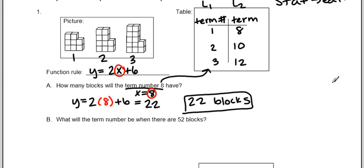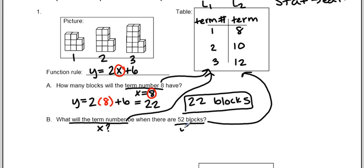B says, what will the term number be when there are 52 blocks? So now I don't know what the term number is. And again, this term number, referring to that left side of the table, which is the x's. I don't know what x is. But I do know I have 52 blocks, which is my right side of my table. So now I know that y equals 52. So I'm going to take this 52 and plug it into my equation wherever I see a y.